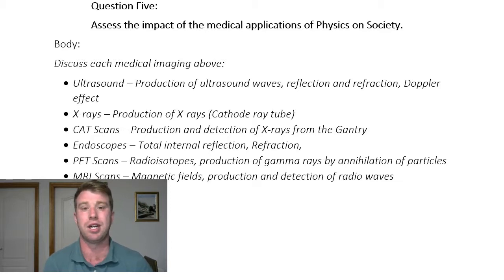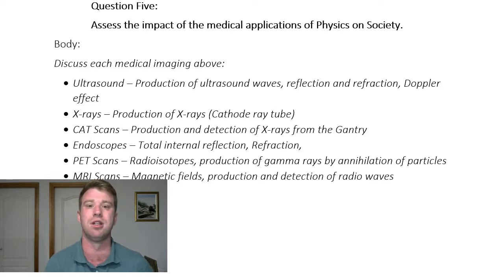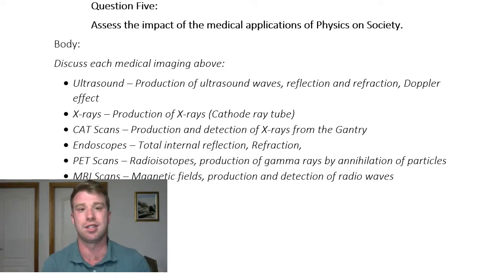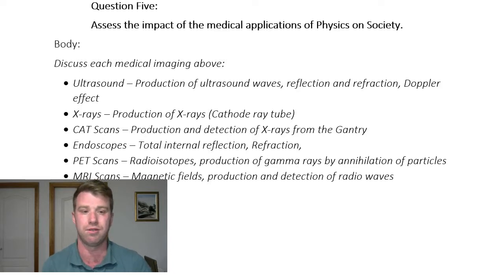Then you can talk about X-rays — production of X-rays in the cathode ray tube, which you've learned in the third topic from IDC implementation. You've got CAT scans — production and detection in the gantry. Endoscopes — total internal reflection. PET scans — radioisotopes and the annihilation of positrons and electrons in terms of the production of gamma rays. And MRI scans — discussing the magnetic fields and the production and detection of radio waves from the gantry, or from hydrogen nuclei within the body.